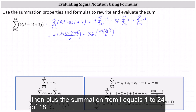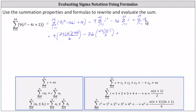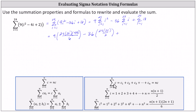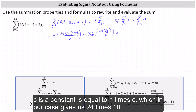And then plus the summation from i equals 1 to 24 of 18. To evaluate this, we'll use the summation formula: the summation from i equals 1 to n of c, where c is a constant, is equal to n times c. In our case this gives us 24 times 18.